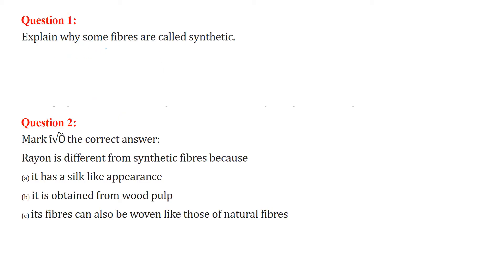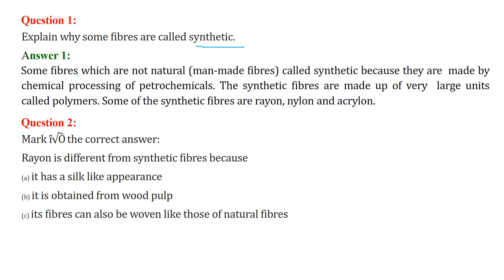The first question is: explain why some fibers are called synthetic. They are called synthetic because they are manmade; they are not naturally occurring. These manmade fibers are known as synthetic because they are made by chemical processing of petrochemicals. Synthetic fibers are made up of very large units called polymers. Examples of synthetic fibers are rayon, nylon, and acrylic.